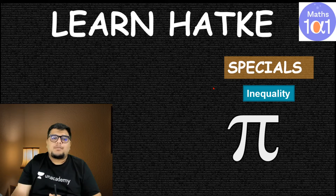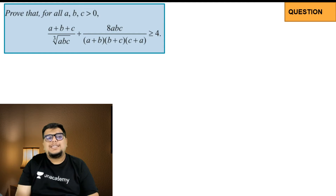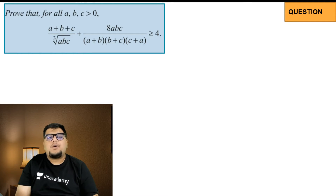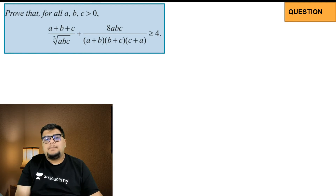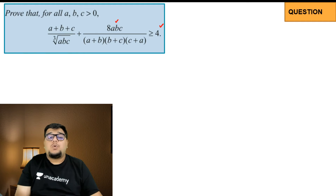Let's see what the problem says. It says: prove that for all numbers a, b, c which are greater than 0, (a + b + c) divided by the cube root of abc, plus 8abc divided by (a+b)(b+c)(c+a), is greater than or equal to 4. So this is what is given in the question.